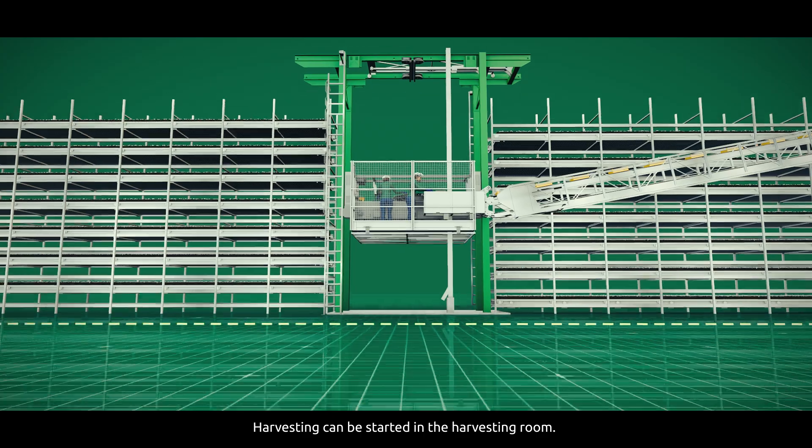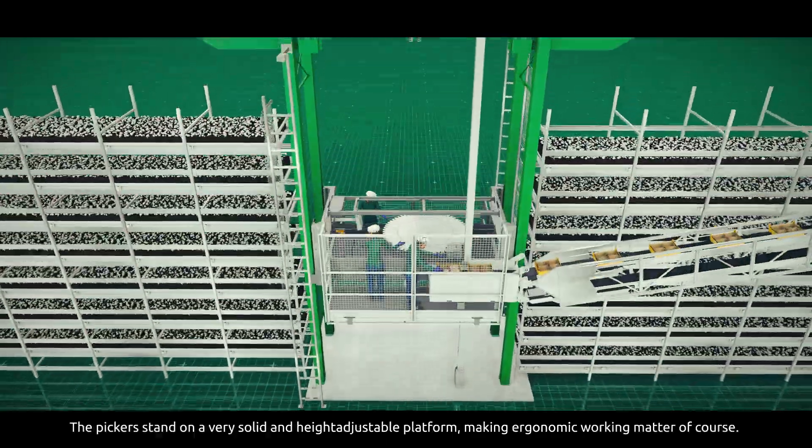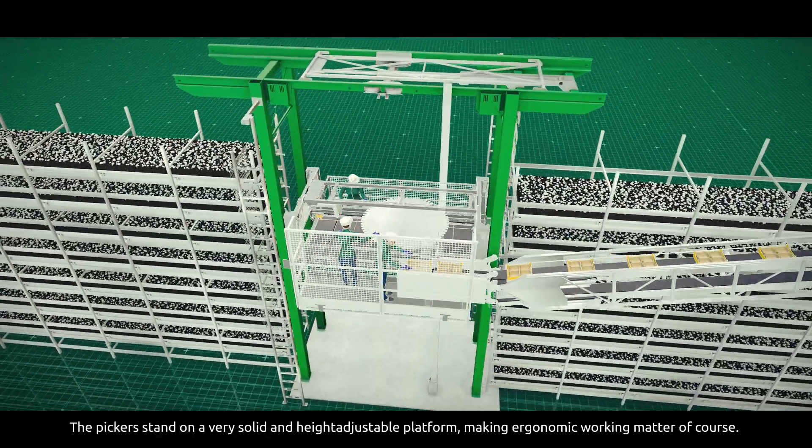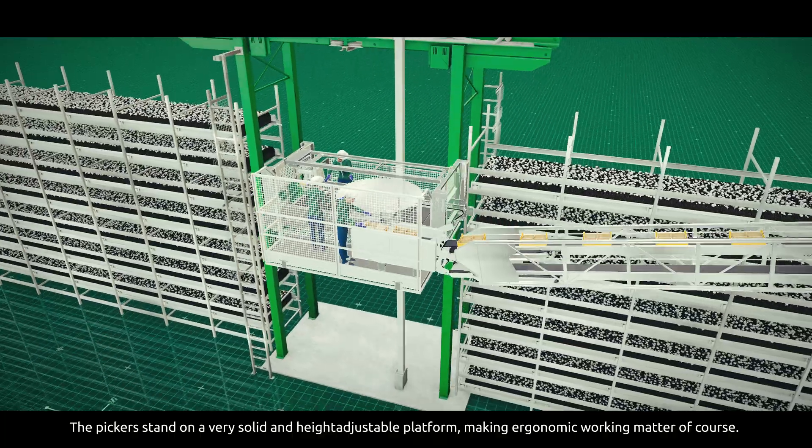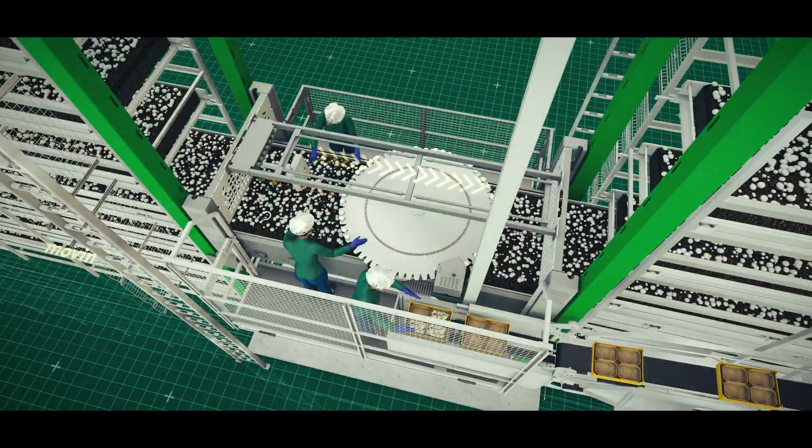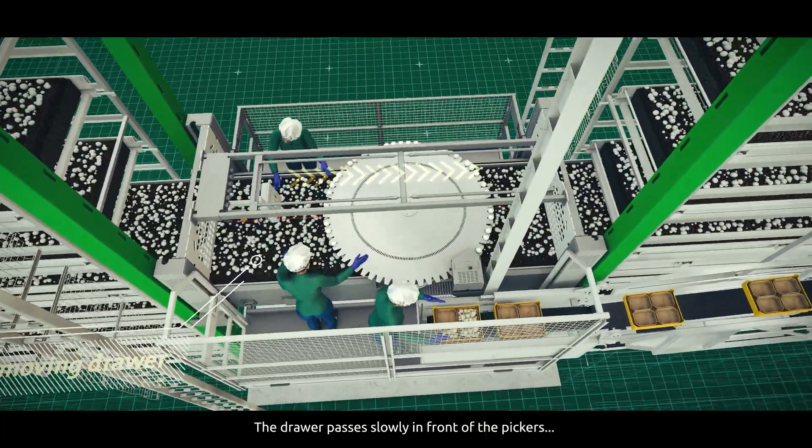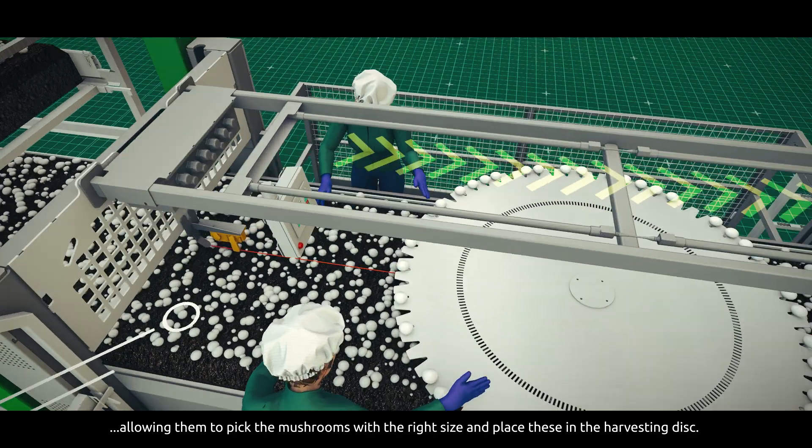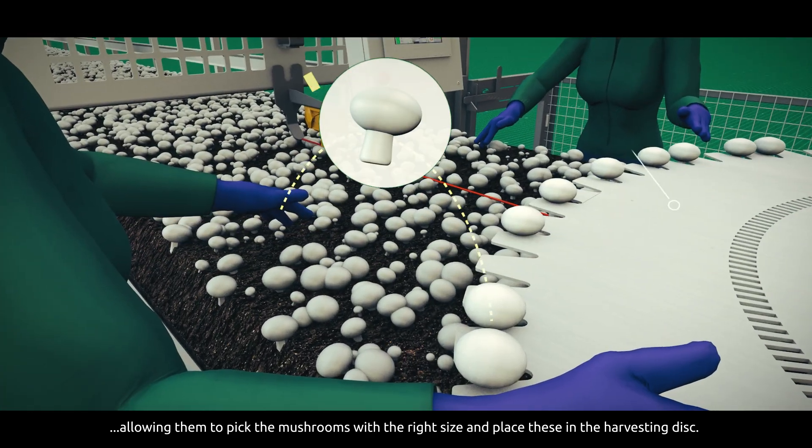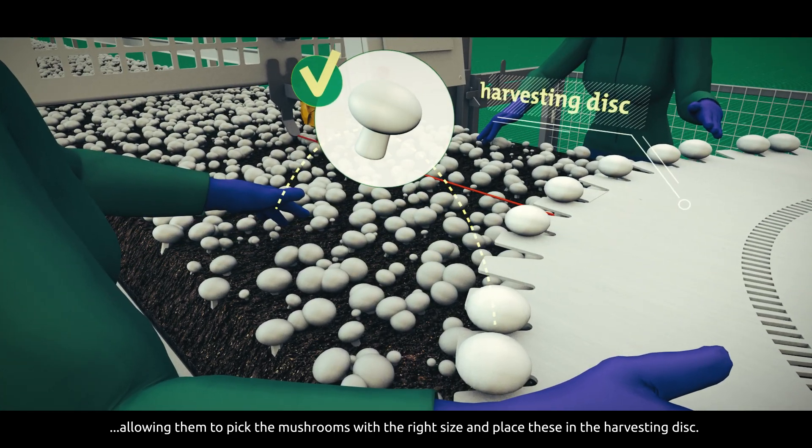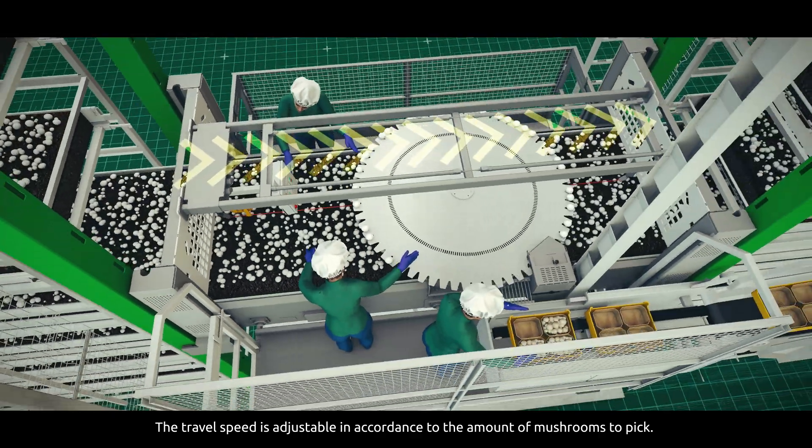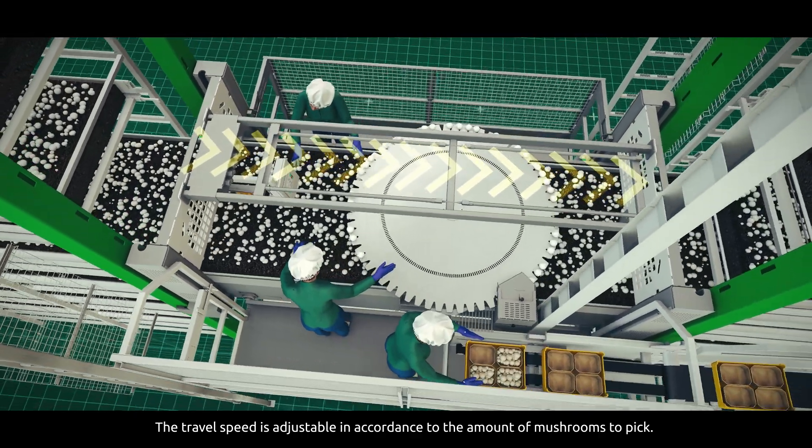Harvesting can be started in the harvesting room. The pickers stand on a very solid and height adjustable platform, making ergonomic working a matter of course. The drawer passes slowly in front of the pickers, allowing them to pick the mushrooms with the right size and place these in the harvesting disk. The travel speed is adjustable in accordance to the amount of mushrooms to pick.